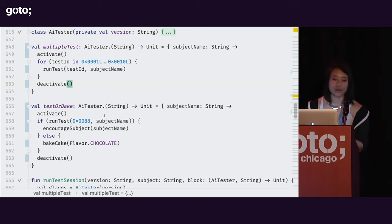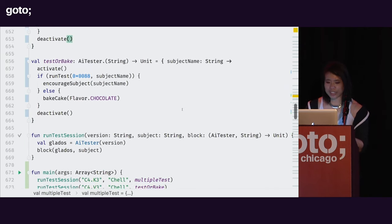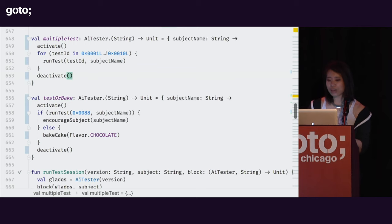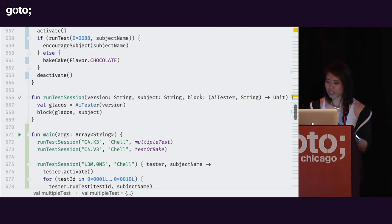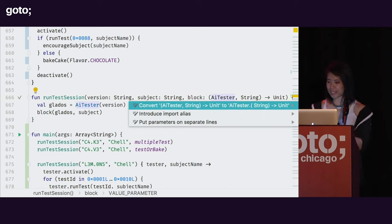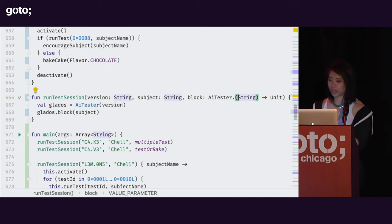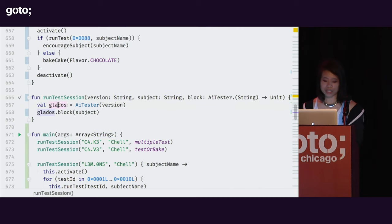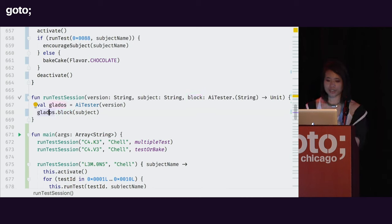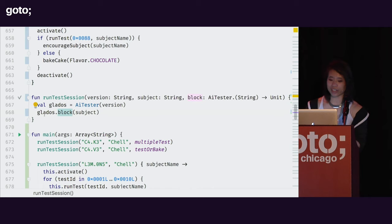We can write our own versions of apply or also this way. What's really interesting is that I have these two lambdas with receivers, and I can actually change my higher-order function to take them in, very easily with an IDE intent action that allows me to select any parameter and swap it into the receiver position. What's interesting here is that now that the tester is the receiver type, I can call the block as if it was a method on that type.